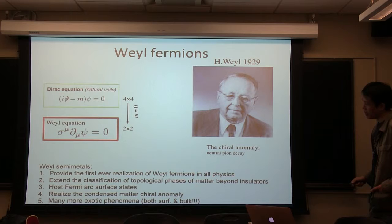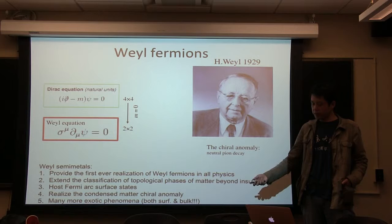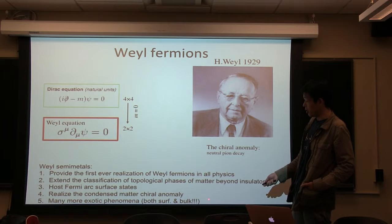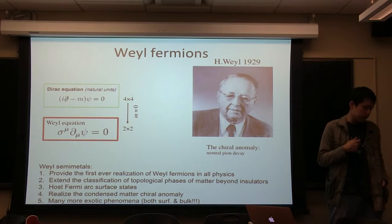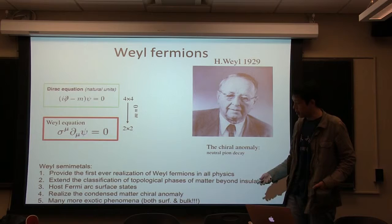Weyl fermions play a very important role in particle physics, like the standard model, but they have never been observed as a fundamental particle. Therefore, Weyl semimetals in condensed matter actually provide the first-ever realization of Weyl fermions in all of physics. In contrast to topological insulators where only the surface Dirac states are interesting and one wants to get rid of the bulk, in Weyl semimetals both the surface and the bulk are interesting. In the bulk we have the Weyl fermions, and on the surface there are Fermi arc surface states. This opens up research opportunities for both bulk-sensitive probes like transport and surface-sensitive probes such as ARPES and STM.